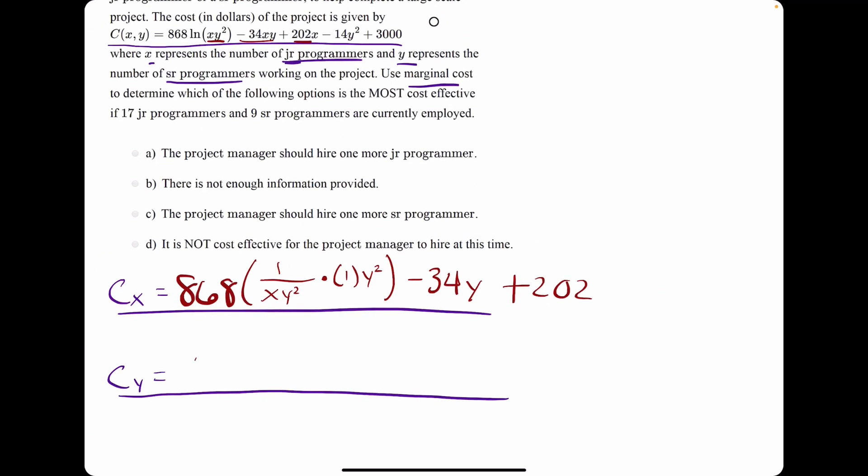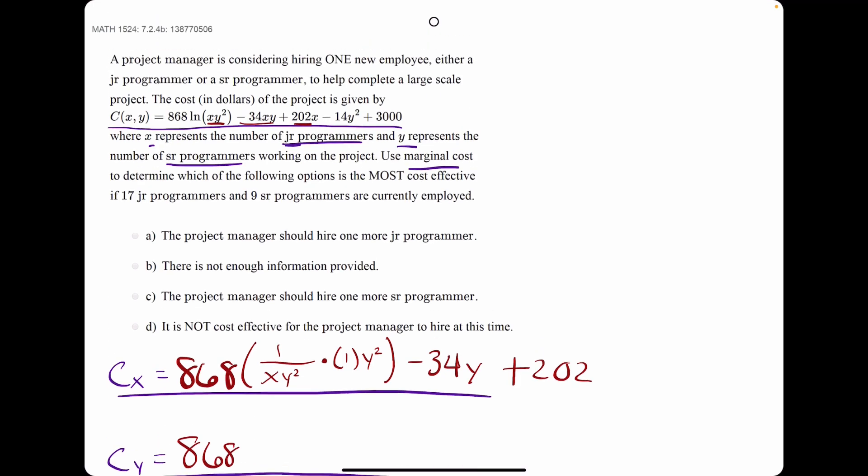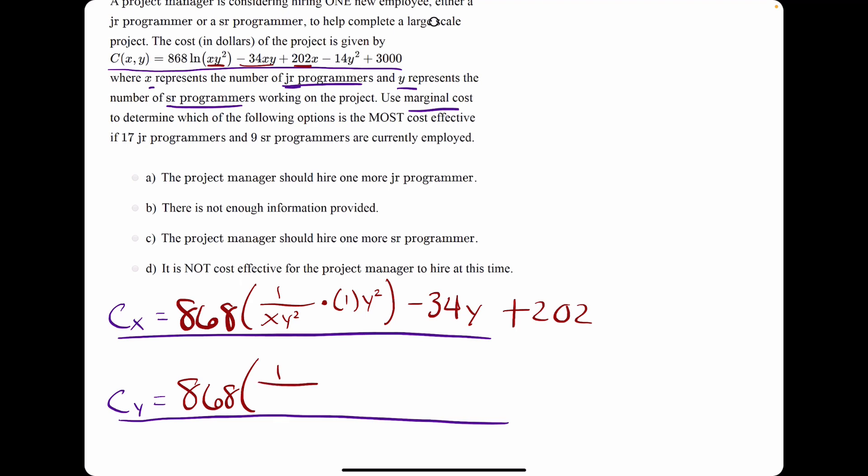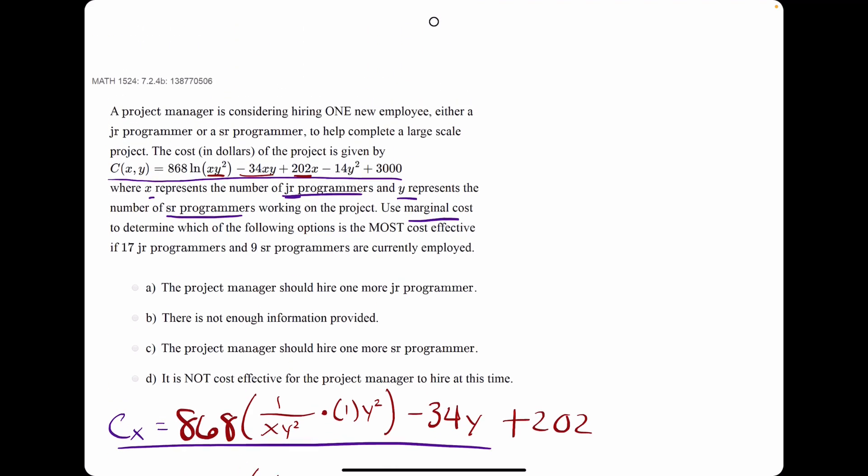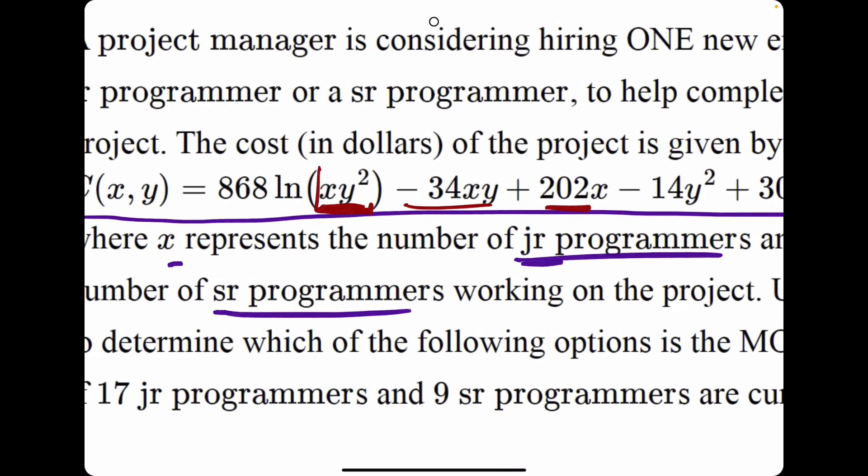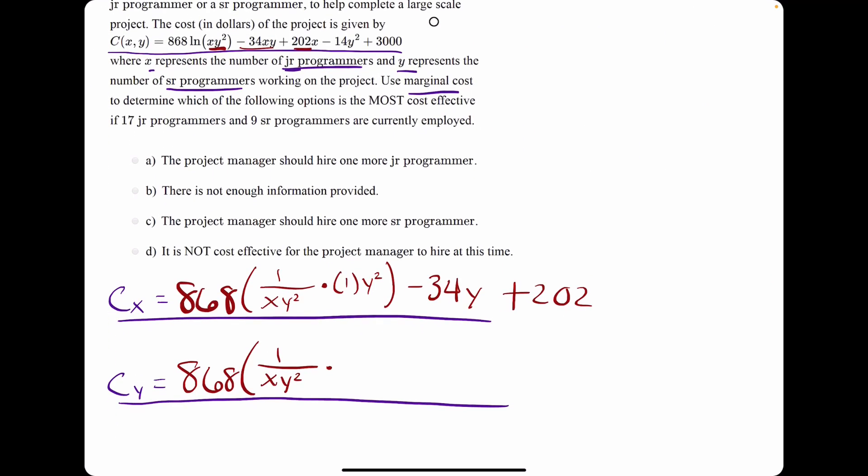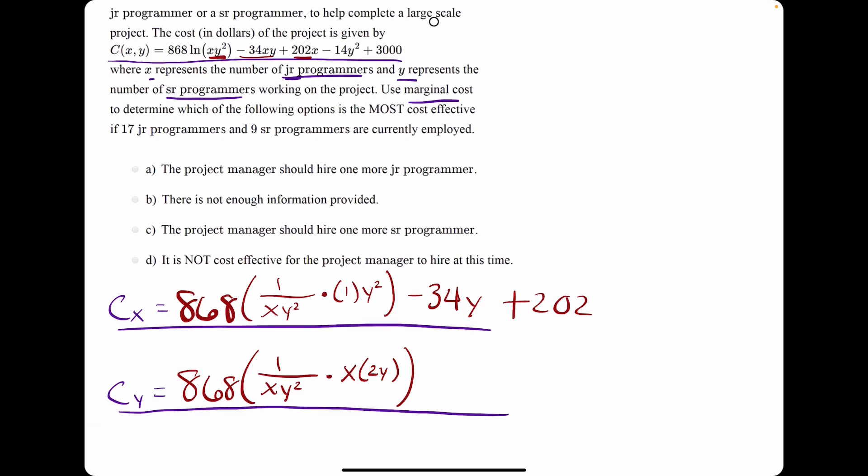We're going to find the derivative now with respect to y of the original function. We have the 868. The ln piece, or the ln derivative piece, will stay the exact same, because ln of something goes to 1 over this something. But then we need to find the derivative of this with respect to y. The derivative of y squared would go to 2y, but then the x would stay along for the ride because it was attached to begin with. That's the ln piece.